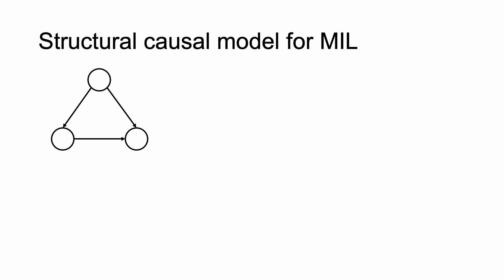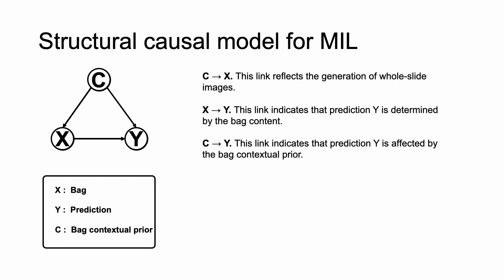In short, we try to learn the causality for bags and labels. To achieve this, we first need to translate the MIL problem into causal languages, the structural causal graph, where each node is a variable and the link is a causality. And for our problem, we have three nodes. Here, X is bag, Y is prediction, and C is bag contextual prior. The link C to X means the data generation process. The link X to Y indicates that the prediction is determined by the bag content. The link C to Y indicates the bag is also affected by the bag contextual prior. And note that the confounder C opens a backdoor shortcut, which causes the spurious correlation between X and Y.